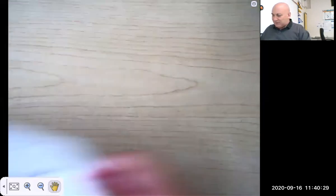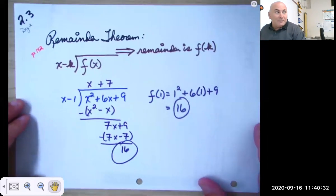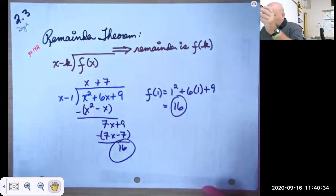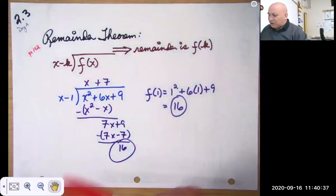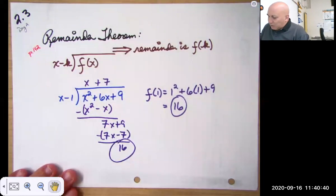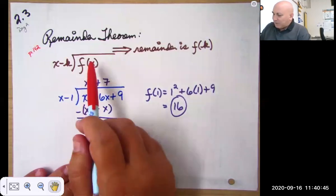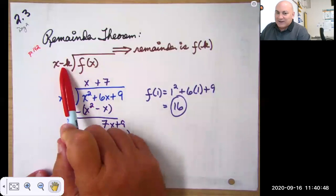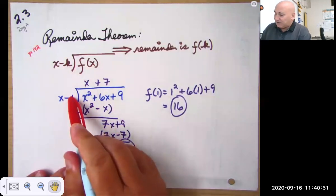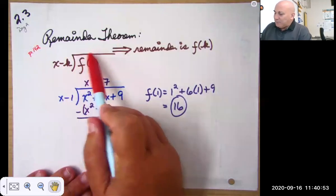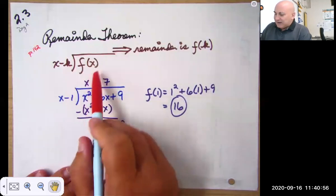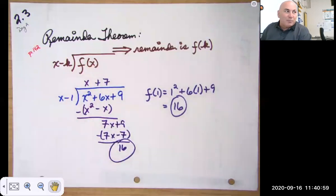So that's polynomial long division and synthetic division. We have two more theorems here. This first one is on page 142 of your text, the remainder theorem. What the remainder theorem says is, if I take a polynomial and divide it by x minus k, so let's say x minus 1 in this case, then whatever remainder I get is what I would get if I just substituted 1 into the original polynomial.